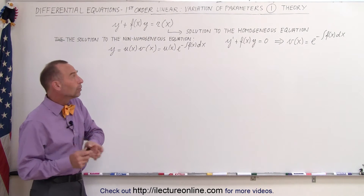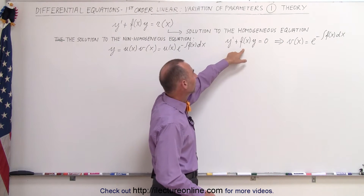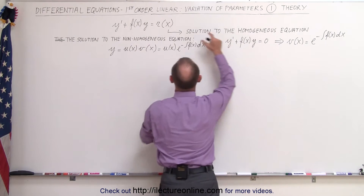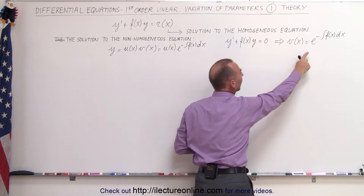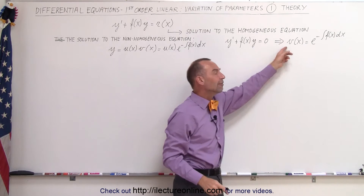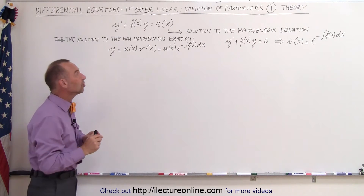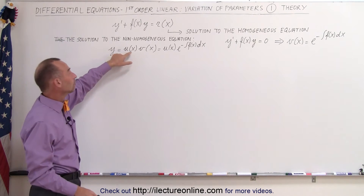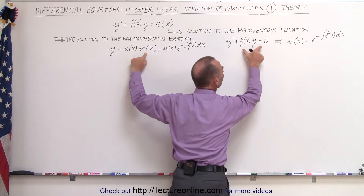We already know that the solution to the homogeneous equation can be written as y prime plus f of x times y equals zero. So this would be the homogeneous part where r of x becomes equal to zero. We know the solution can be written as e to the minus times the integral of f of x dx, and let's call that v of x. If that's true, then the solution to the non-homogeneous equation should look like v of x multiplied by another function of x, where v of x is the solution to the homogeneous part.